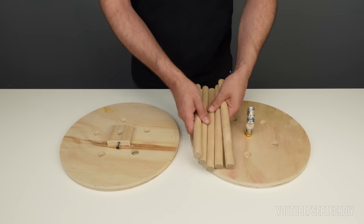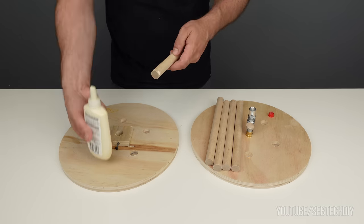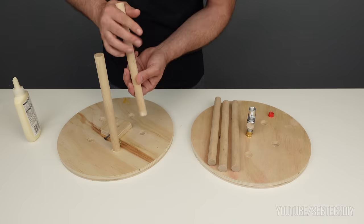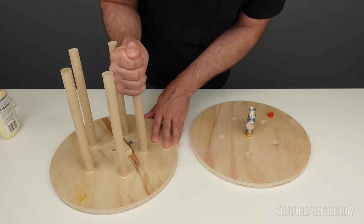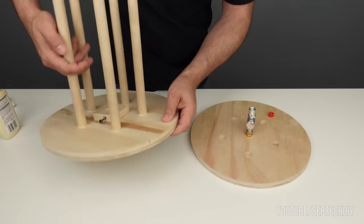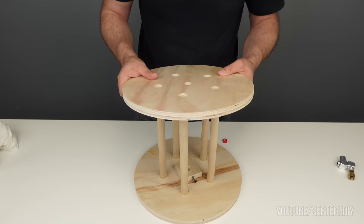To assemble the reel together, I simply put some wood glue on each end of my dowel and I insert them one by one. I repeat on the other side until my reel is complete.